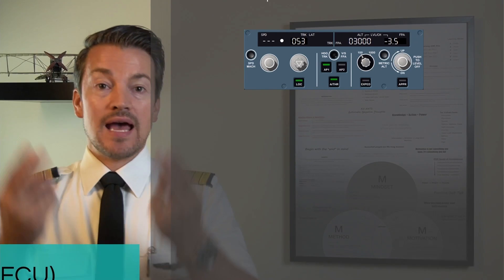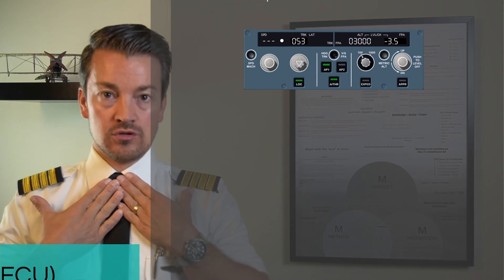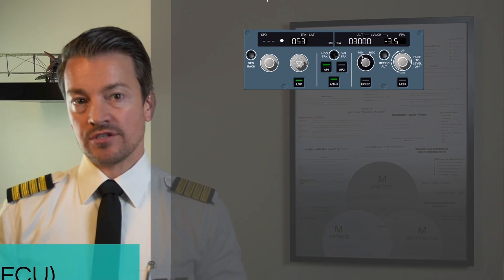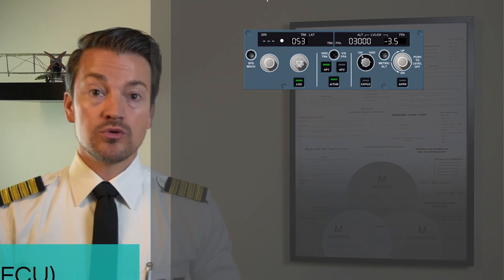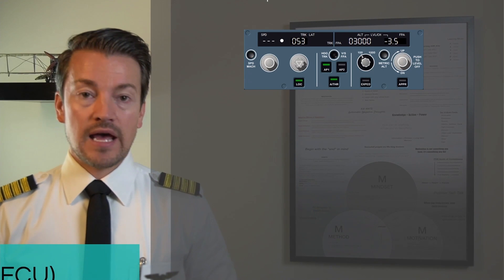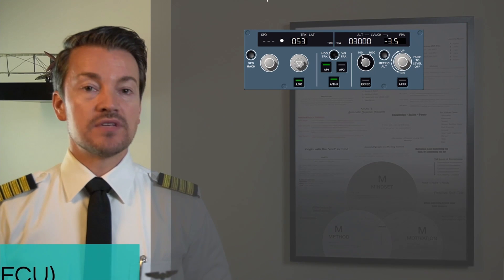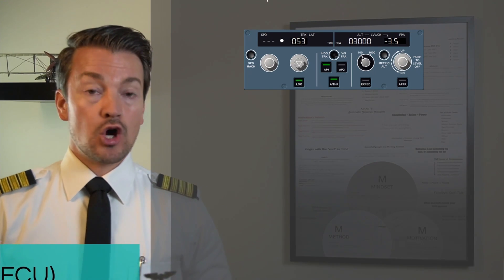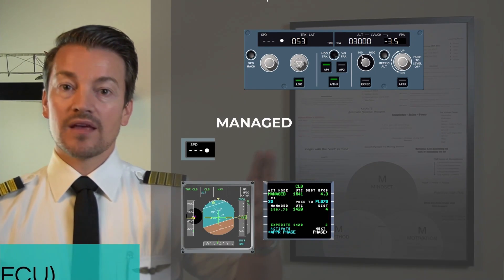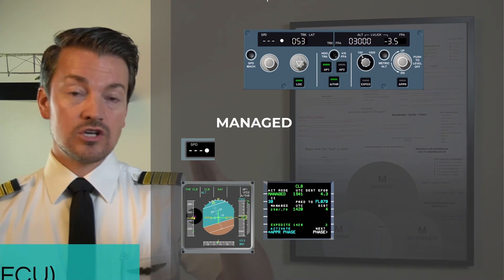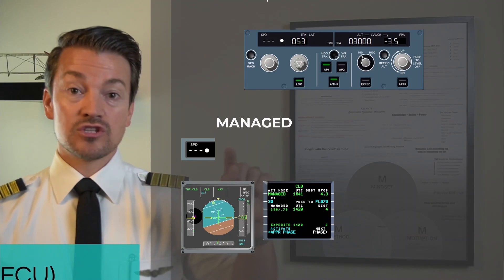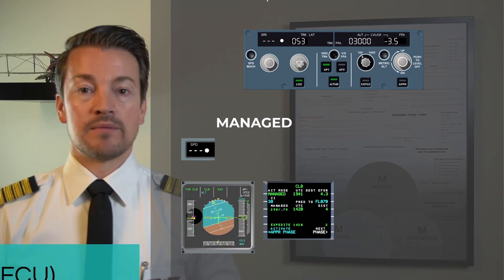On the other hand, if you pull any of the knobs towards you, you're saying 'I have control' — that's what we call selected guidance. Selected guidance allows for short-term navigation and lets us override what the flight management and guidance computer is doing from its pre-programmed flight plan. We know when the aircraft is in managed mode because the value in the window above shows dashes, and next to the value there's a dot. This indicates managed mode — the value being flown is coming from the flight management and guidance system, not this window.